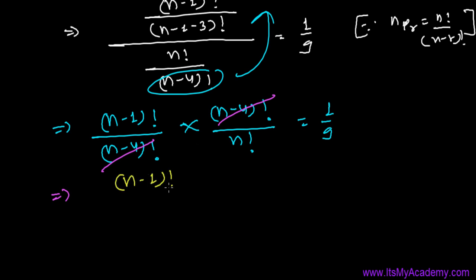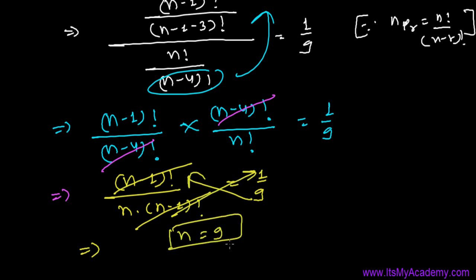Now (n-1)! cancels with (n-1)!, so we move this to this side and this to this side, giving us n equals 9. And this is how we solve it.